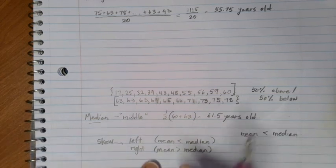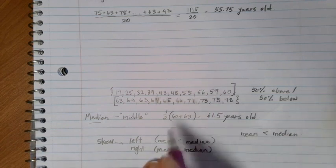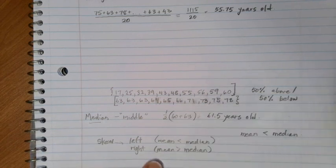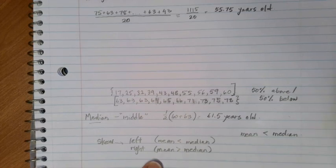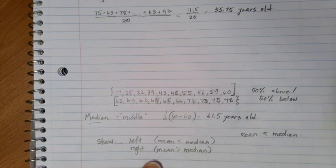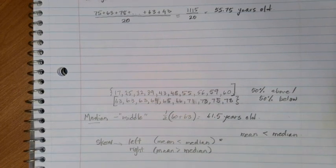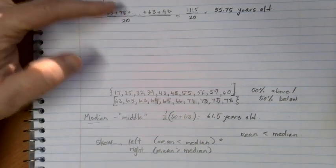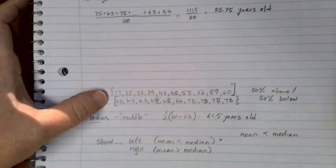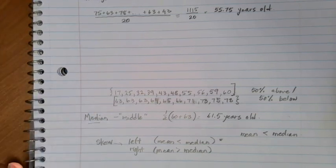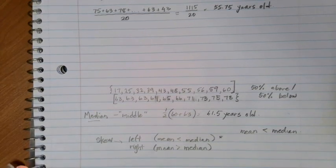And it skews to the right in a case where the mean is bigger than the median. This would happen in cases where we had a pull of a lot of bigger values that were farther out from our group. So in this case we're skewed left because we have some kind of out of the ordinary smaller numbers in terms of ages for our Nobel Peace Prize winners.